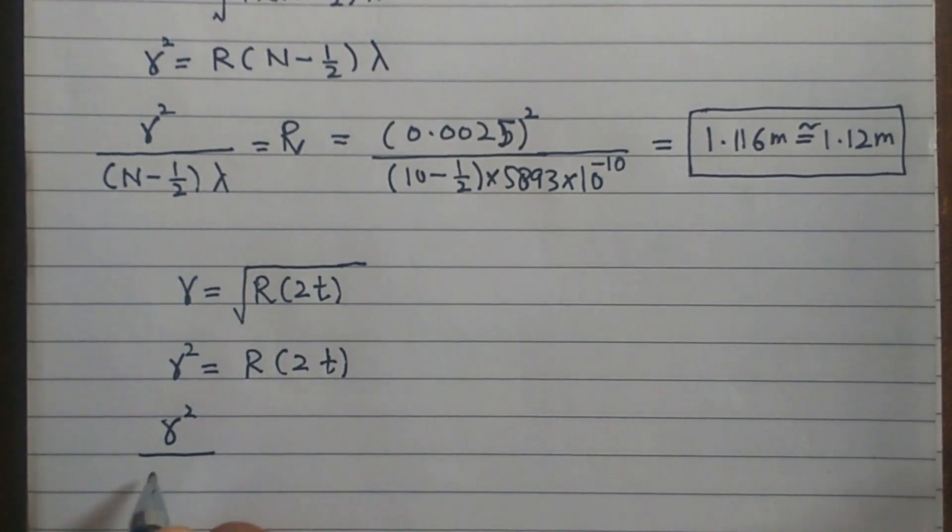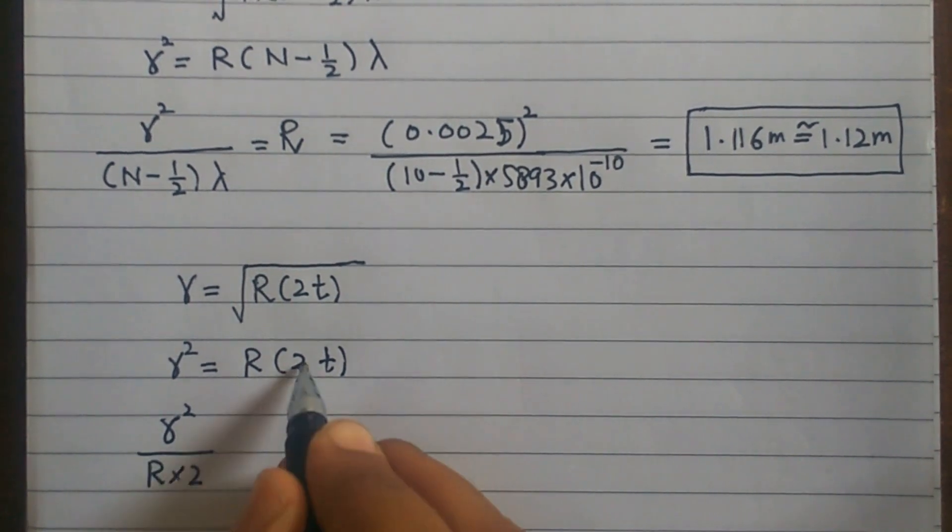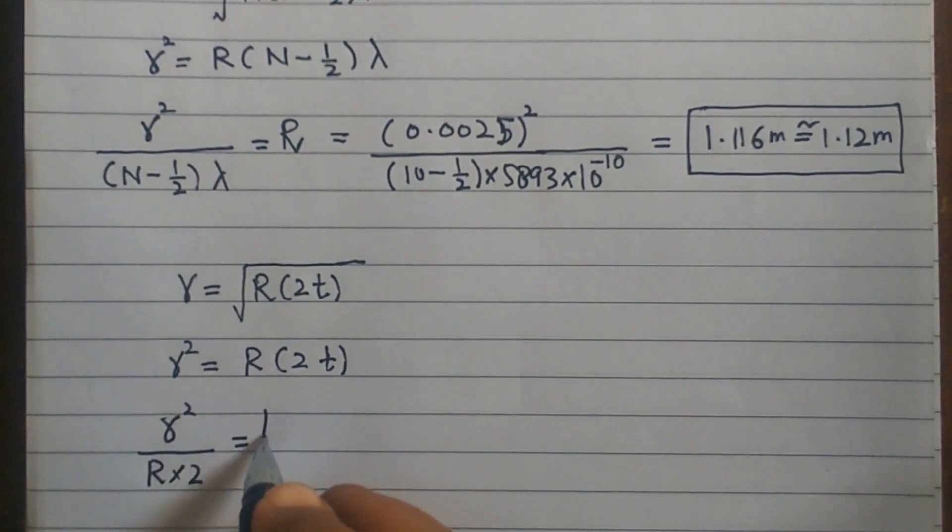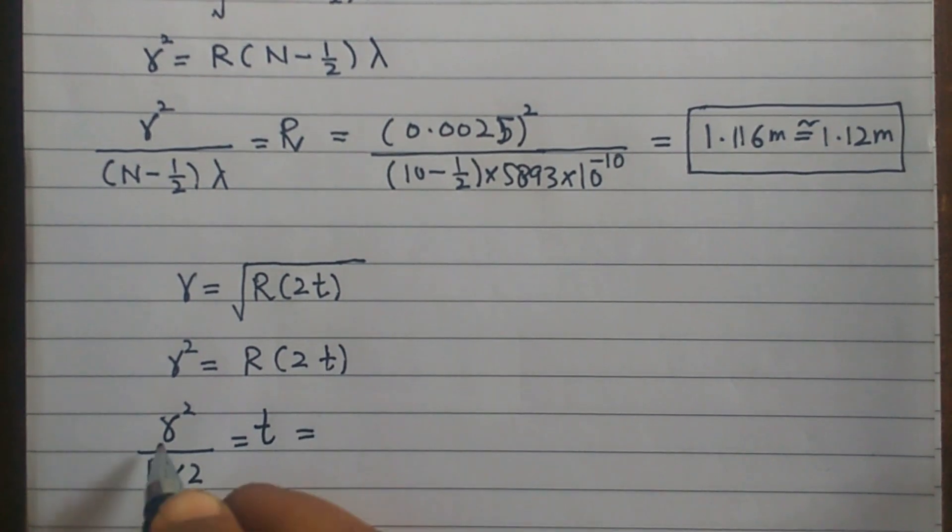R square divided by R into 2. 2 divided by R, then what will happen? T. Don't do anything, just put values.